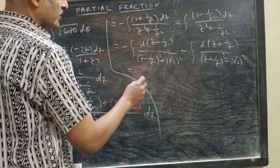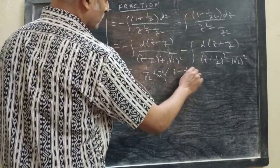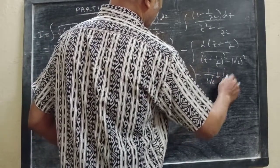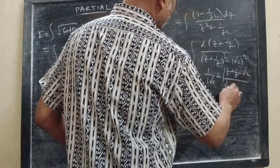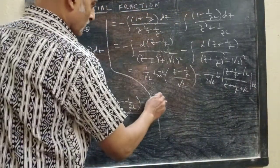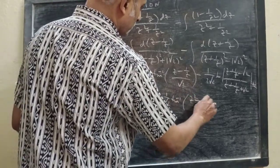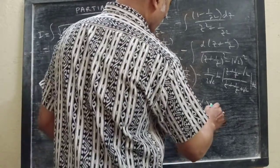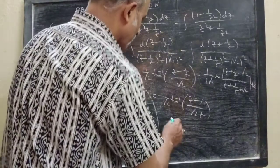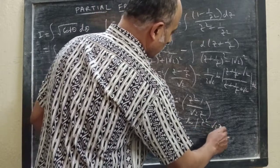Now they are integrable. This will be: −(1/√2) tan⁻¹((z − 1/z)/√2) minus (1/(2√2)) ln|(z + 1/z − √2)/(z + 1/z + √2)| + C. Then: −(1/√2) tan⁻¹((z² − 1)/(√2 · z)).